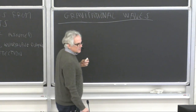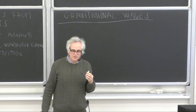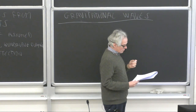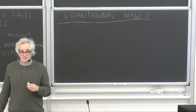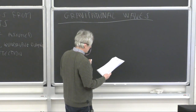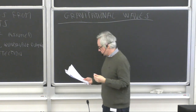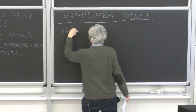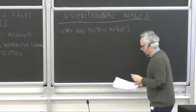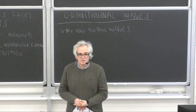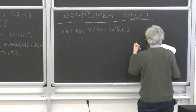Even though at the beginning the existence of gravitational waves was somewhat controversial, now, remember that in general relativity the gravitational field is described by the metric of the space-time. For this reason, gravitational waves have to be metric waves. Gravitational waves are metric waves — they change the proper distance, they change the geometry of space-time, that is, they change the proper distance between nearby events of the space-time.